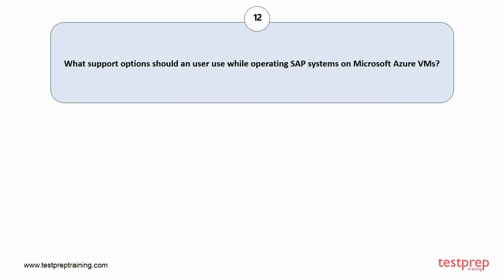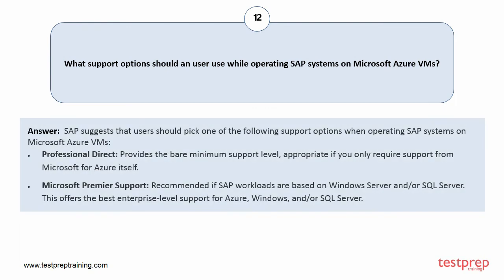Question number twelve: What support options should a user use while operating SAP systems on Microsoft Azure VMs? SAP suggests users pick one of the following support options: 1. Professional Direct — provides the bare minimum support level, appropriate if you only require support from Microsoft for Azure itself. 2. Microsoft Premier Support — recommended if SAP workloads are based on Windows Server and/or SQL Server, offering the best enterprise-level support for Azure, Windows, and/or SQL Server.